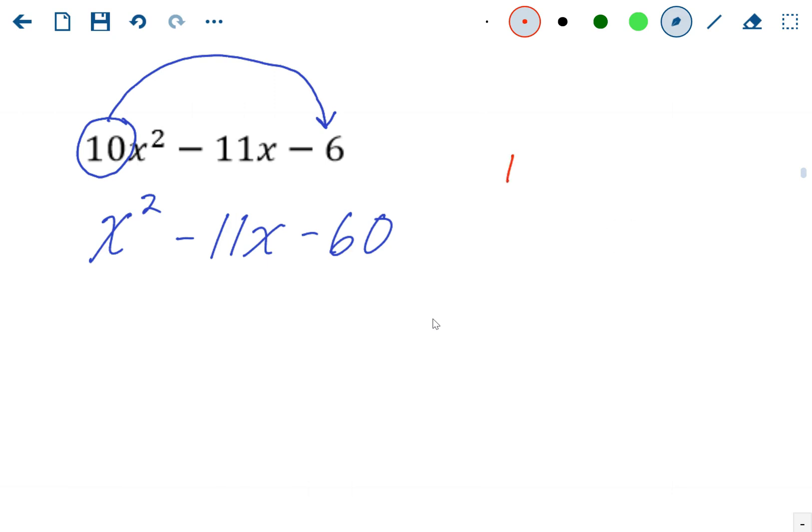We got 1 and negative 60. It'll be 2 and negative 30. I know the bigger factor has to be negative because we're adding to negative 11. 3 and negative 20. 4 and negative 15. 5 and negative 12. And then 6 and negative 10. Those are all the factors of 60.